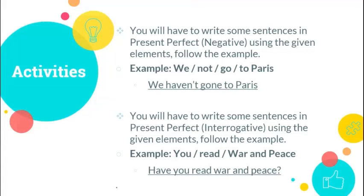The next activity is, you will have to write some sentences in present perfect interrogative using the given elements. Follow the example: you read War and Peace. Have you read War and Peace?